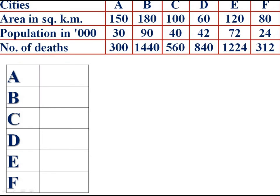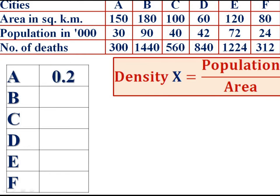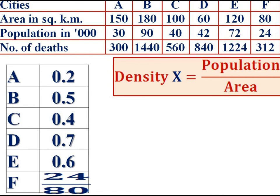So we are computing the x variable — density, which is population divided by area. For city A: 30 divided by 150 = 0.2. City B: 90 divided by 180 = 0.5. City C: 40 divided by 100 = 0.4. City D: 42 divided by 60 = 0.7. City E: 72 divided by 120 = 0.6. City F: 24 divided by 80 = 0.3.